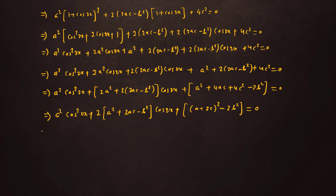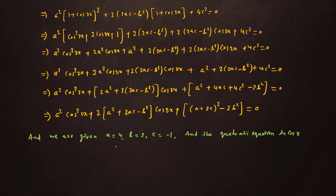We are given A = 4, B = 2, and C = −1. The quadratic equation in cos x is A cos²x + B cos x + C = 0. After putting in the values of A, B, and C, we get 4 cos²x + 2 cos x − 1 = 0.